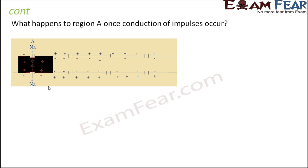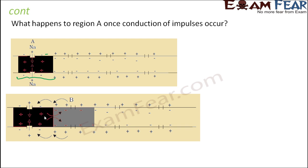When the action potential got generated in region A, due to influx of sodium ions, a lot of positive charges build up inside, making the inner surface positively charged and the outer surface negatively charged. As a result, current started to flow from region A to region B on the inside, and from region B to region A on the outside. This influx of sodium ions due to the stimulus is quite short-lived — after some time it stops. As soon as the action potential is conducted from region A to region B, the potassium ion permeability of region A increases, and therefore potassium ion outflux starts to occur, balancing the influx of sodium ions.